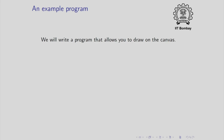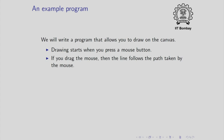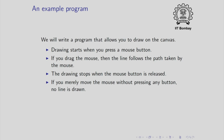Now I am going to show you an example program. This is a very simple program, but you can build upon it. We are going to write a program that allows you to draw on the canvas. You take your cursor to where you want to start drawing a line and press a mouse button, then drag the mouse along the path you want the line drawn. When you want to stop, you release the mouse button. You can then move your mouse to another position and draw another line. If you merely move the mouse without pressing any button, no line is drawn. To stop the program, press the Escape key.